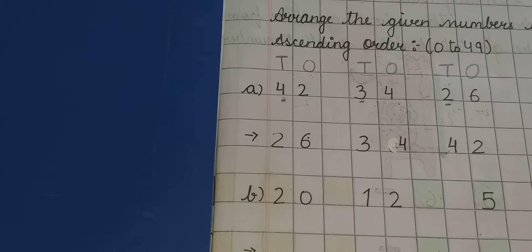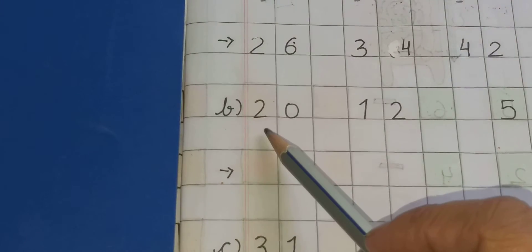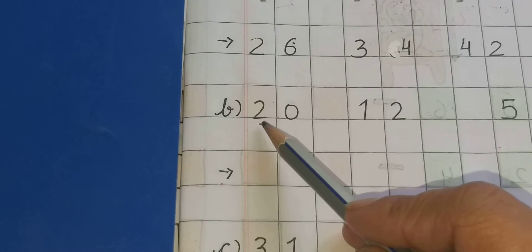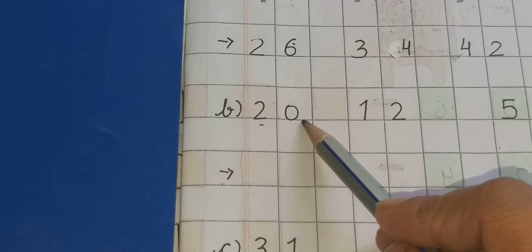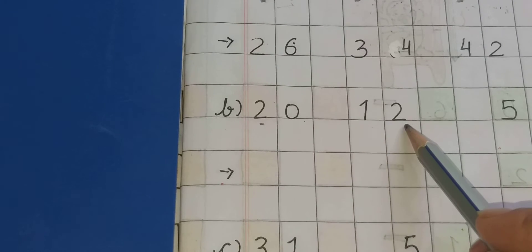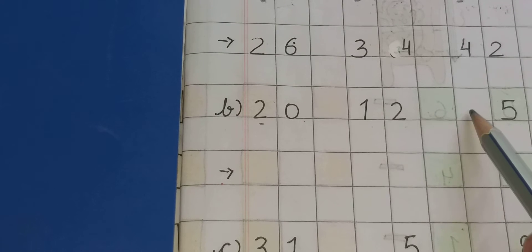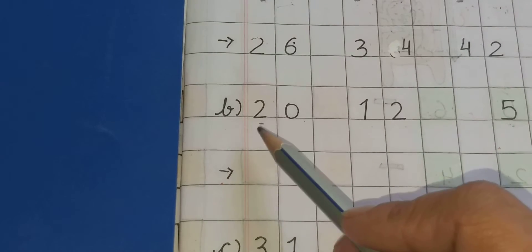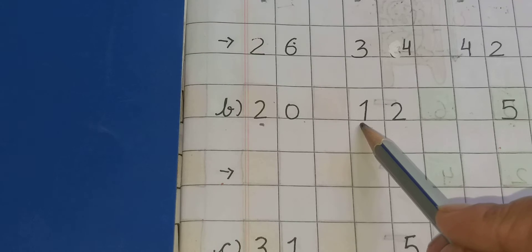Now come to the next numbers. Again compare the numbers given at the tens place. Read loudly with me: 2, 0 — 20. 1, 2 — 12. And only number 5. Tens के place पर यहाँ कुछ नहीं है, because it's a one digit number. Here it is given 2 and 1 at tens place.